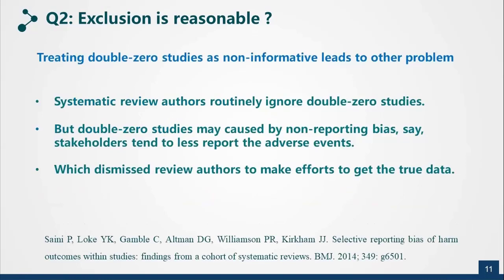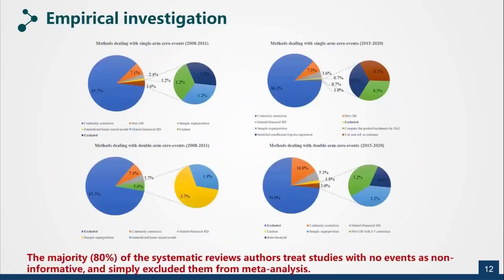In contrast, we should be concerned about the problem of treating double zero studies as non-informative, because double zero studies may be caused by non-reporting barriers — for example, stakeholders tend to under-report adverse events. If we treat double zero studies as non-informative, this discourages review authors from making efforts to obtain the true data, and therefore introduces systematic errors. Our recent investigation found that almost 18% of systematic review authors simply treat studies with no events as non-informative and exclude them from the meta-analysis, without even discussing the potential impact on results. This is somewhat serious.